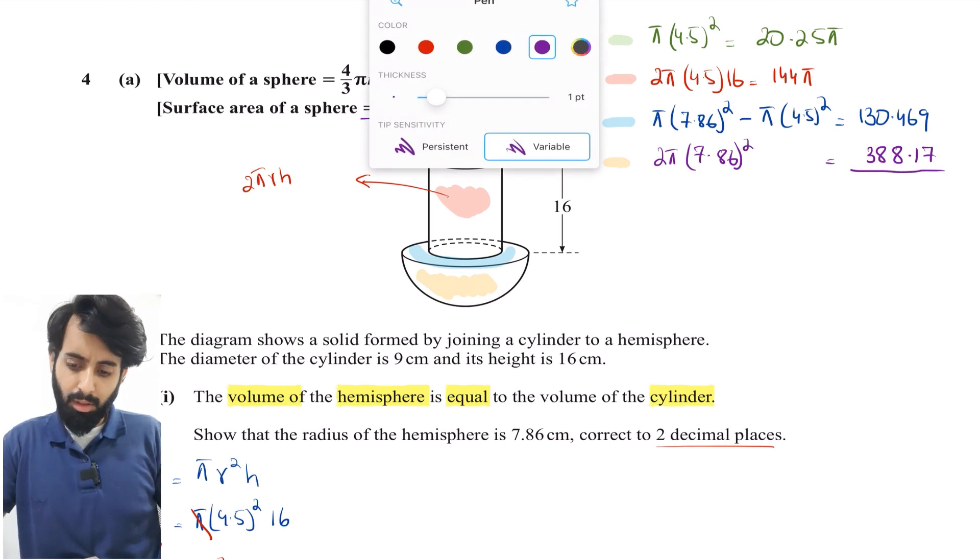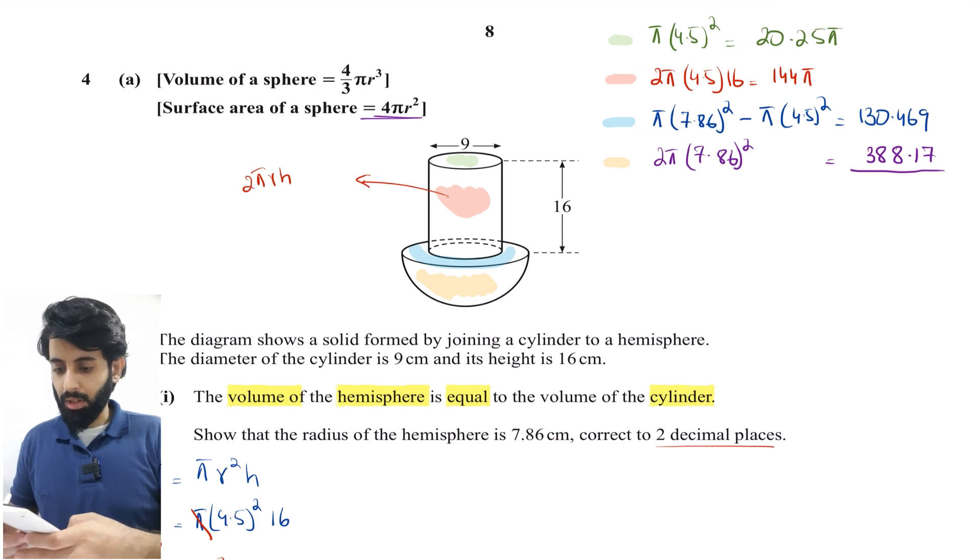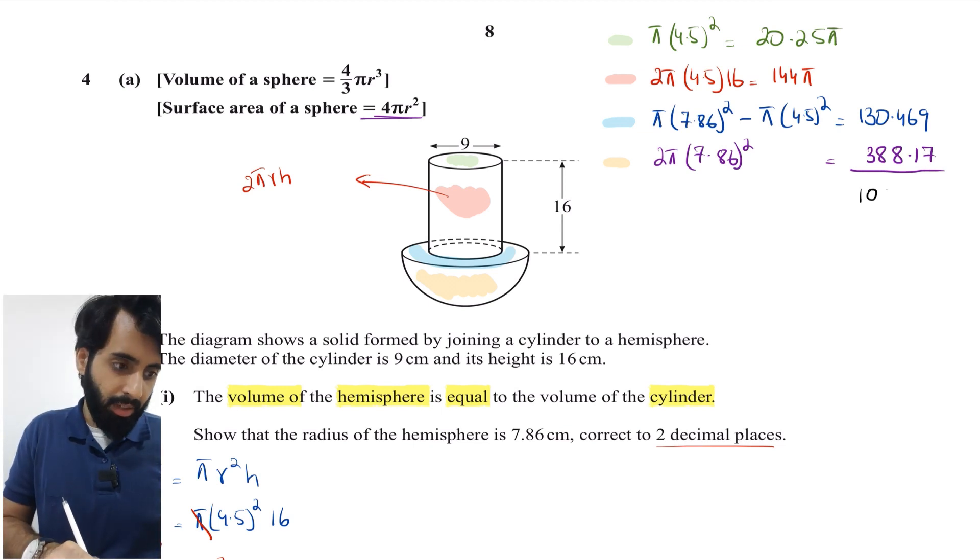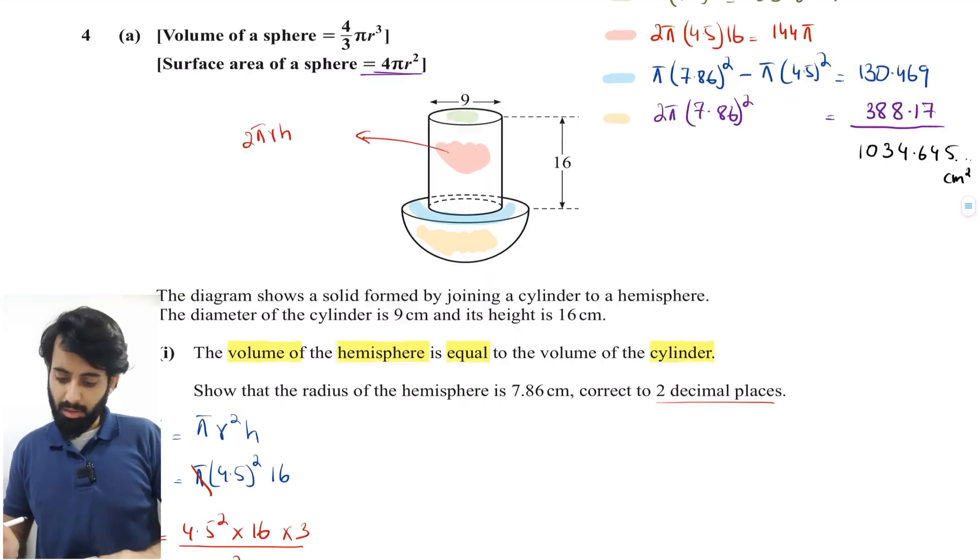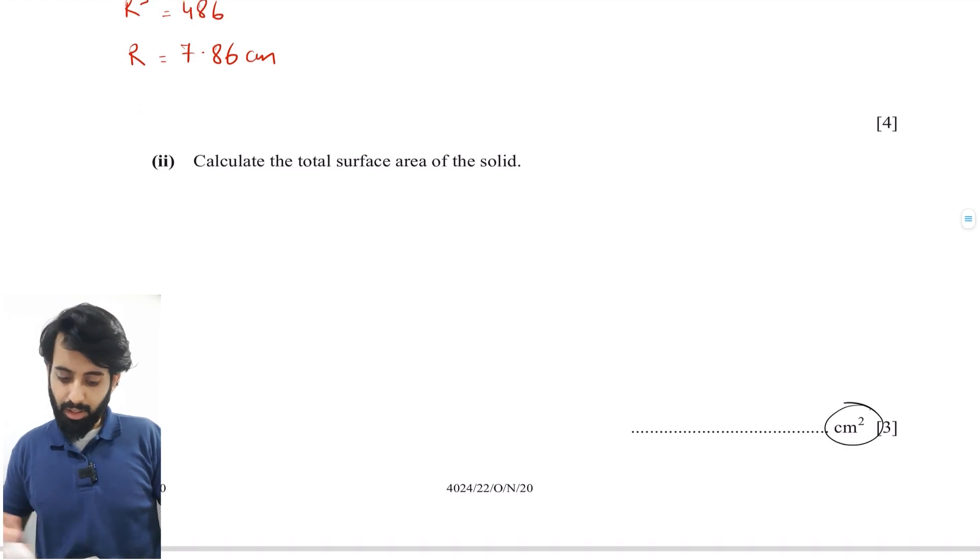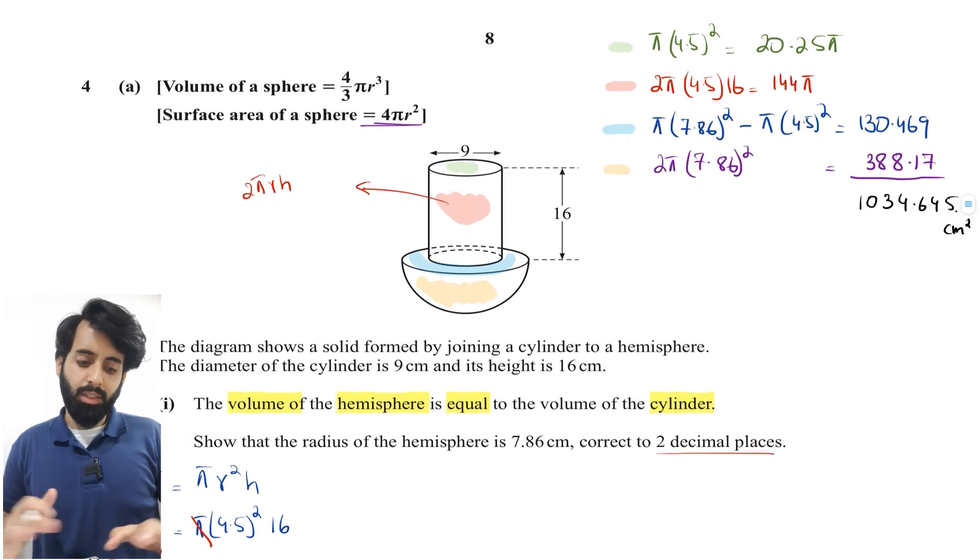Let's sum them up. Here's what I'm doing in my calculator: 20.25π + 144π + 130.469 + 388.172. This gives me 1034.645 cm². The unit is cm² because we're dealing with surface area - you don't have to worry about the unit because it's already given.